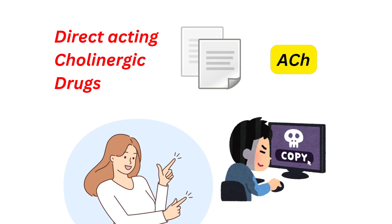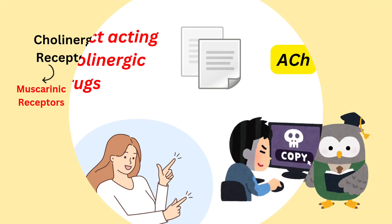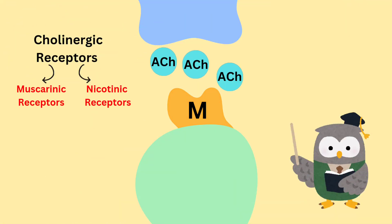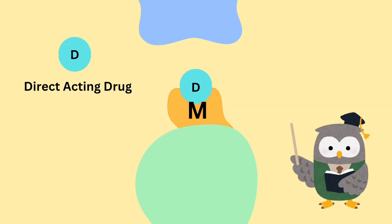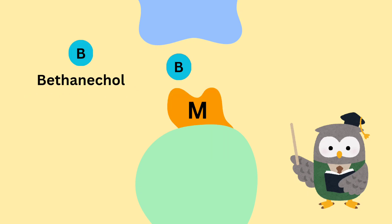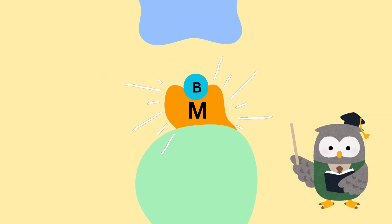It means they copy the acetylcholine action. Acetylcholine directly binds to the cholinergic receptors, which may be muscarinic receptors or nicotinic receptors. And like acetylcholine, direct acting agonists can also bind to the muscarinic or nicotinic receptors. Take the example of bethanecol, which binds to the muscarinic receptors directly and activates them.